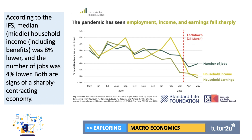We can see the impact of the great lockdown in new research from the Institute for Fiscal Studies, the IFS. The chart shows that both median household incomes and total employment have declined sharply since the middle of March. Household income, including welfare, was down 8%. The number of jobs was 4% lower. Both are indicative of a severe contraction in GDP. The UK economy is clearly in deep recession.